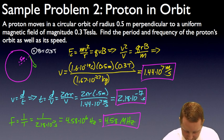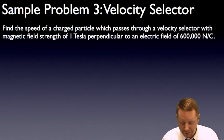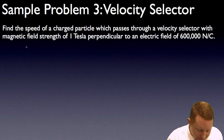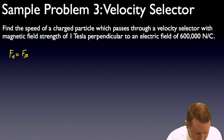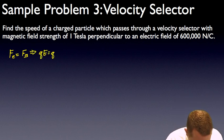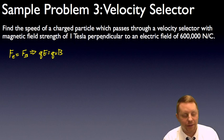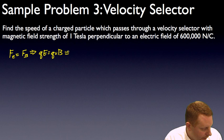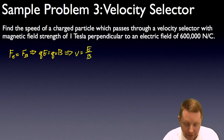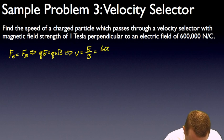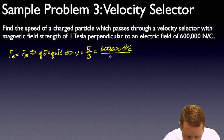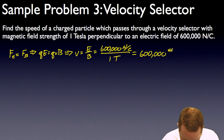Let's do one more here. Find the speed of a charged particle which passes through a velocity selector with magnetic field strength of one tesla perpendicular to an electric field of 600,000 newtons per coulomb. Well, in this case, the electric force must be equal to the magnetic force for it to pass through undeflected. Therefore, QE equals QVB sine theta, which is going to be 1 again since they're perpendicular, sine 90 degrees is 1. Therefore, the velocity is the electric field strength divided by the magnetic field strength, or 600,000 newtons per coulomb, divided by 1 tesla, which will give us 600,000 meters per second.